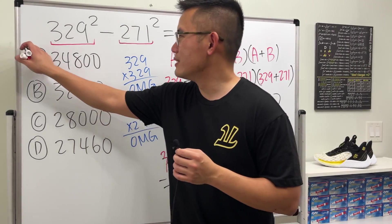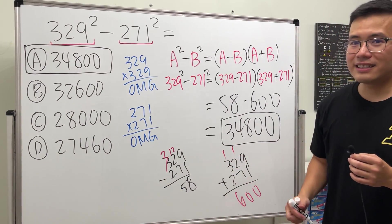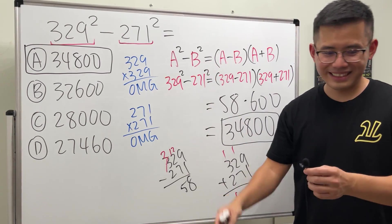What's the answer? Answer choice A: 34,800. All right, just algebra. If you guys like this, I think you guys will also like these other videos, so go ahead and check them out. Thanks for watching.